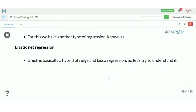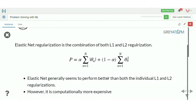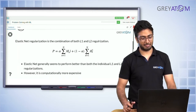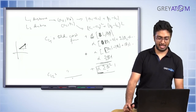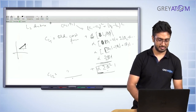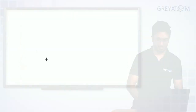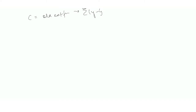The solution for those kinds of cases is the combination — what is called Elastic Net regression. Elastic Net is nothing but a hybrid of L1 and L2 combined. So this is your cost function for L1 and L2 combined. The old cost function was: summation of (y − y_pred)².